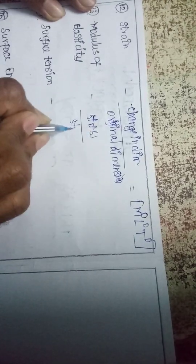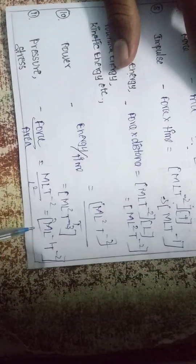Force by strain has the same dimension as force: M L T⁻². Pressure by strain has the same dimension as pressure. Stress by strain — which is Young's modulus — equals pressure formula M L⁻¹ T⁻². So Young's modulus has dimension M L⁻¹ T⁻².